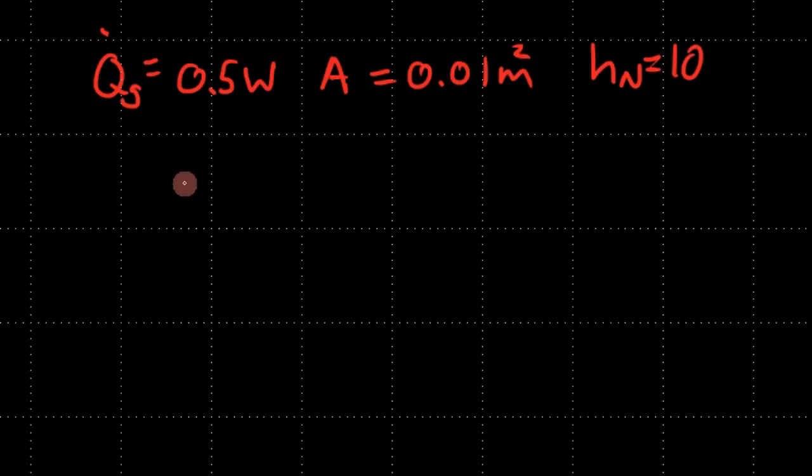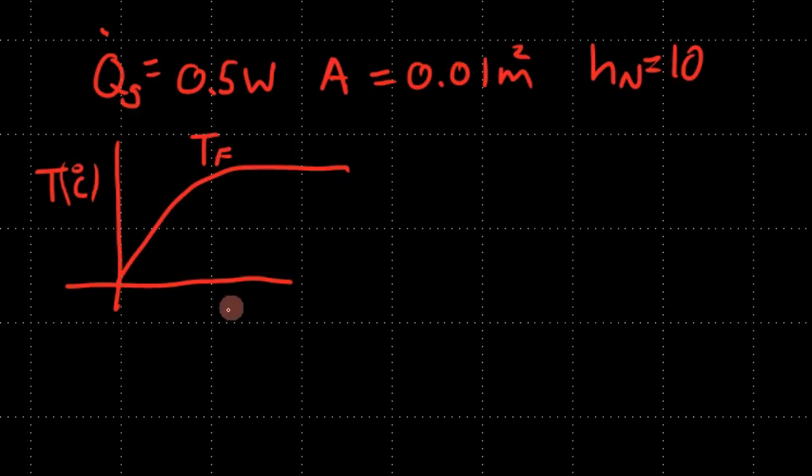So in a steady state formulation, basically what's going to happen? Let's say you just flip on the machine or voltage source. The temperature is going to increase and it's going to stabilize. It's going to get to the final temperature, which we're going to call T_F. So the temperature is going to increase, and we can determine this initial slope using the heat capacitance. But right now, we're just going to be worrying about the final temperature.